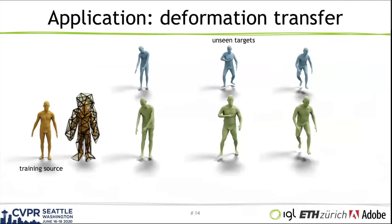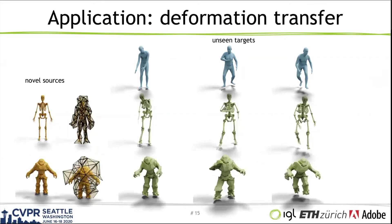As the cage deformation is not strictly tied to the enclosed shape, we can apply an existing deformation to a dissimilar source shape, a technique often referred to as deformation transfer. In this example, our network was trained to deform a human to various other poses. We can then transfer this deformation to a new character, in this case a skeleton or a robot. This is achieved by optimizing the source cage for the new character. Compared to existing works, our method doesn't require known correspondences with the target shape at inference time.